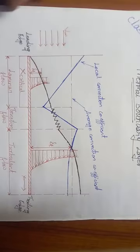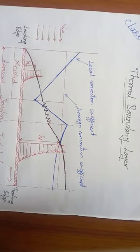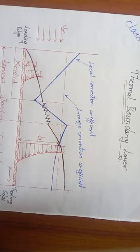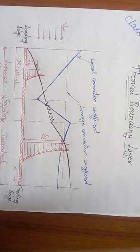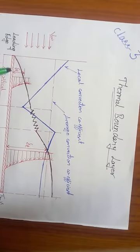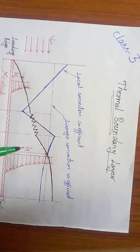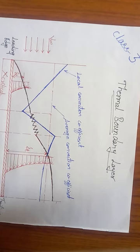Now let us continue to class number 3. We carry forward the concepts from class 2: laminar, transition, and turbulent flow, with a leading edge and a trailing edge. In class 2 we had delta as the velocity boundary layer thickness. Here in class 3, I introduce delta_t—the thickness of the thermal boundary layer.